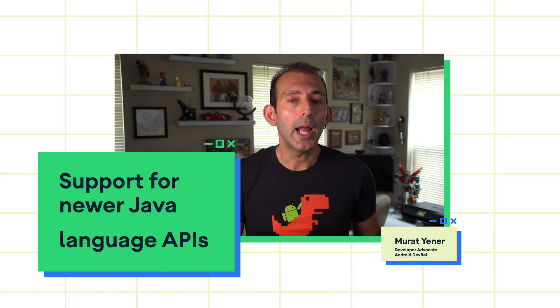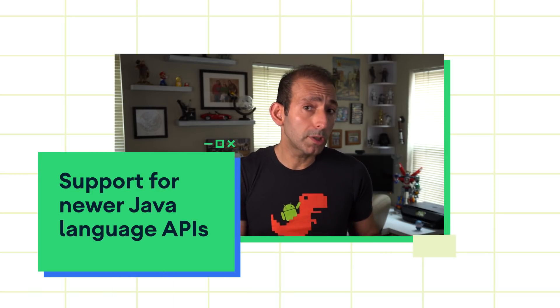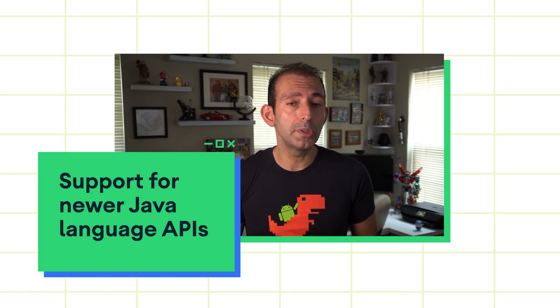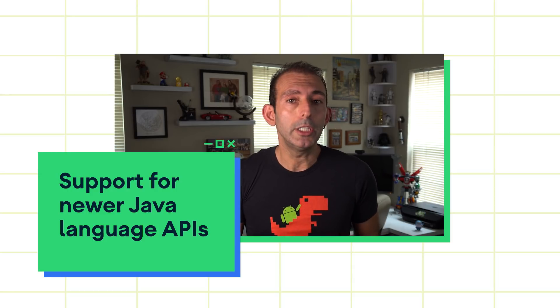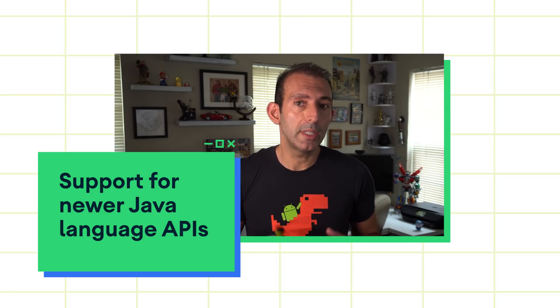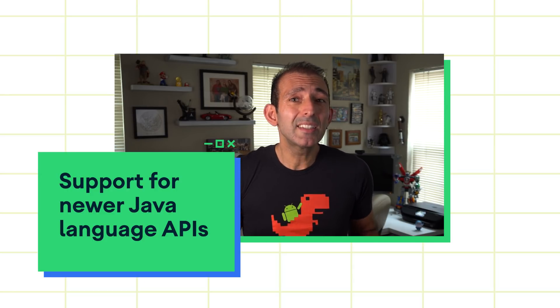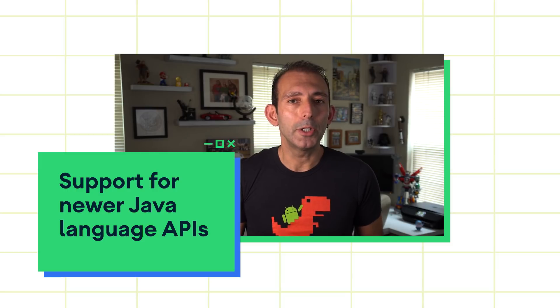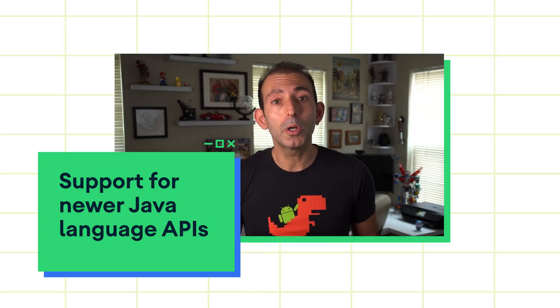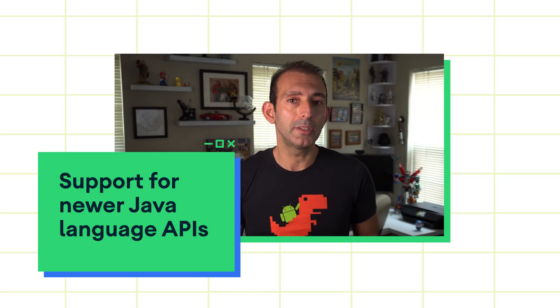If you ever used the Java Time API in your app, you may have ended up with lots of crashes and complaints from users with devices running below API level 26. The reason is that the devices which encountered the issues simply didn't ship with the necessary classes, as at the time, those classes were not part of Android. I'm Murat Yener, a developer advocate for Android, and I'll be talking about Java language updates on Android.